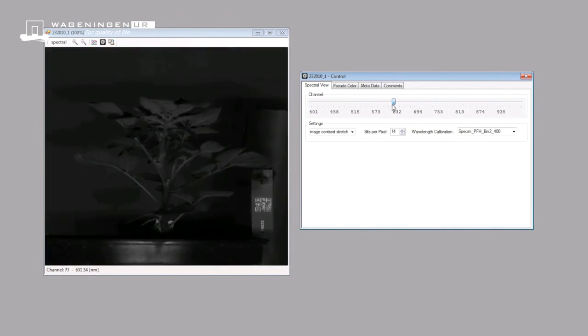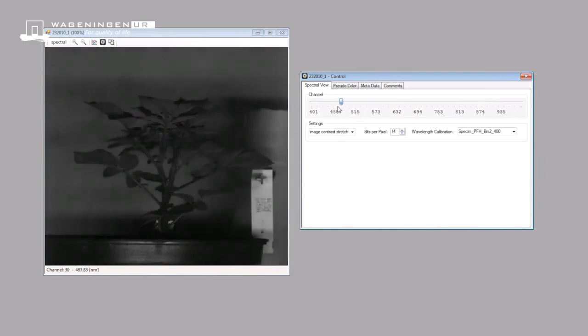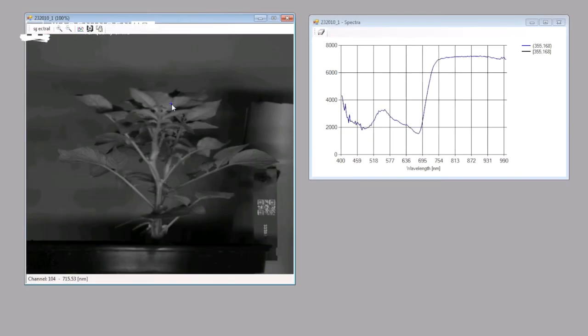Using the slider, we can step through the different wavelengths. By clicking on the image, the corresponding spectrum of the pixel is displayed and can be compared to the spectra at other positions.